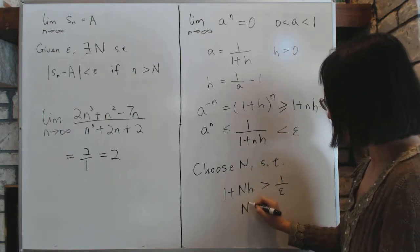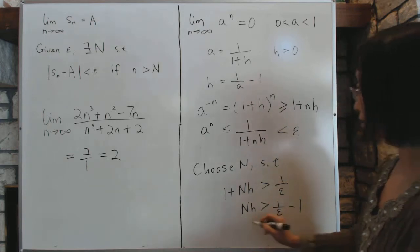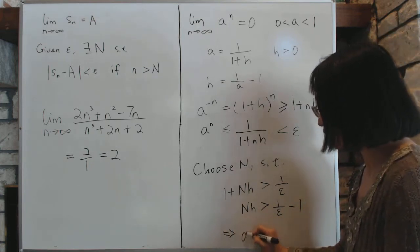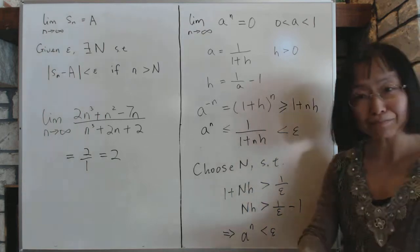Or N times h is bigger than 1 over epsilon minus 1. So as long as this relationship stands, then a to the power n is going to be less than epsilon. And therefore our proof is complete.